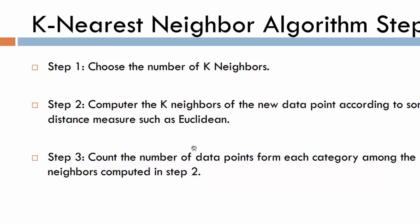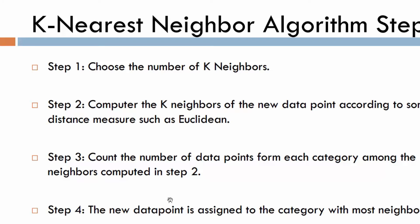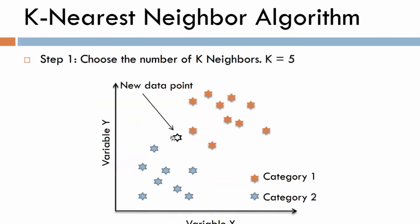You can also use other distance methods such as Manhattan, city block, or Hamming distance, but in most cases Euclidean distance is used. Once you compute the K nearest neighbors, step three is to count the number of data points from each category among those neighbors. If you have more than two categories, simply count how many neighbors belong to each category. Finally, step four is to assign the new data point to the category with the most neighbors.